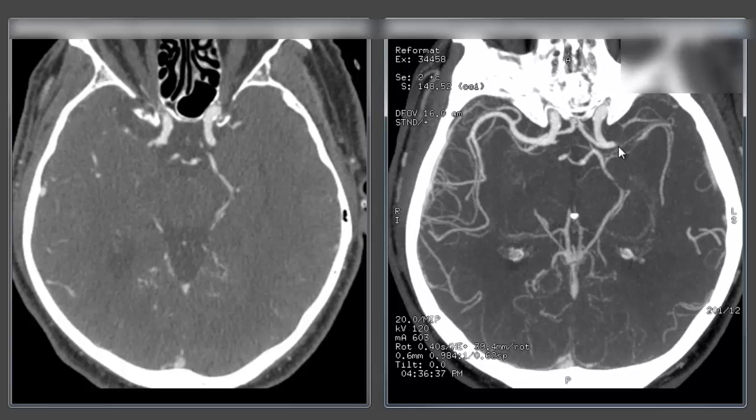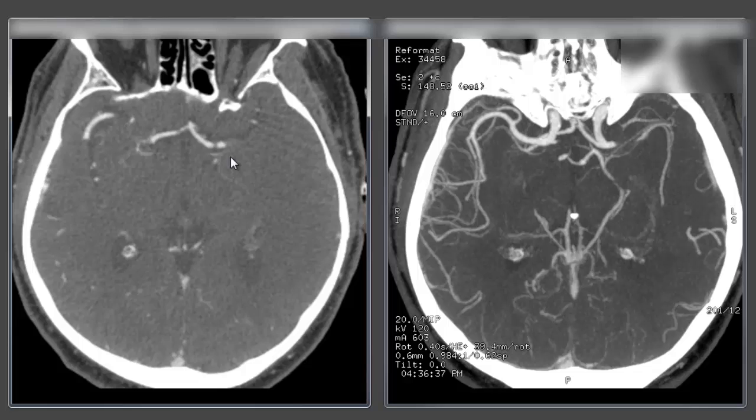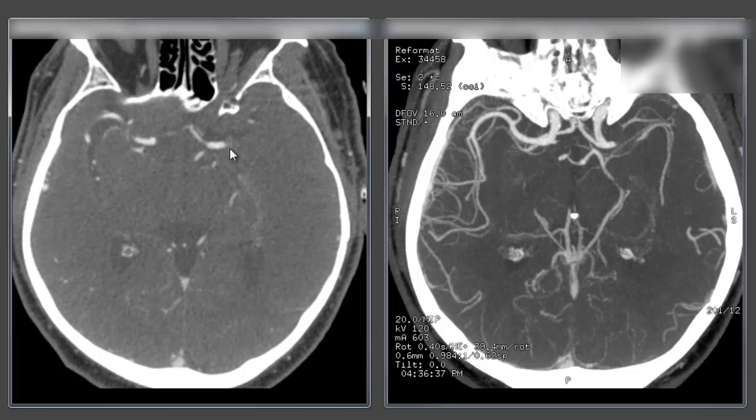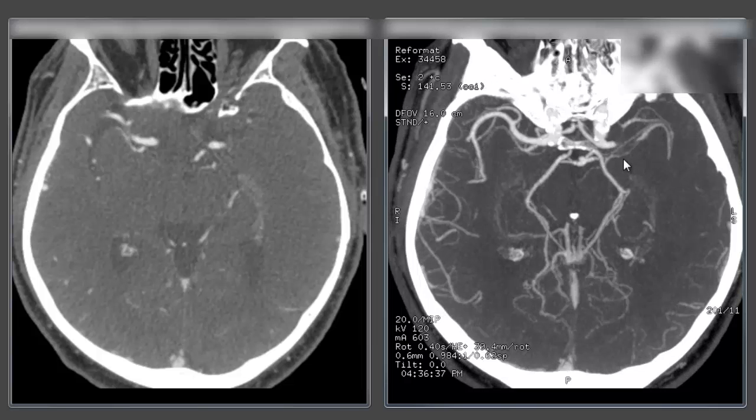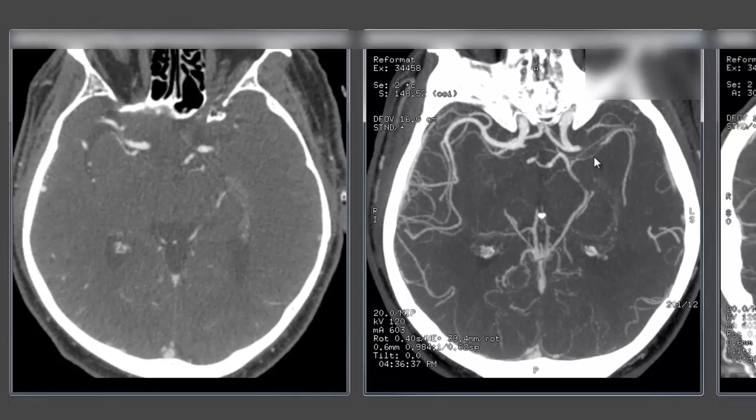It's very easy to see this large artery occlusion on the left side which of course you can see on the source images and you need to confirm it on the source images. But using the thick MIPS reconstructions makes it that much easier to see on a first pass evaluation. So that's one of the major uses in the acute stroke setting, to very quickly ascertain yes, here indeed is a large artery occlusion.